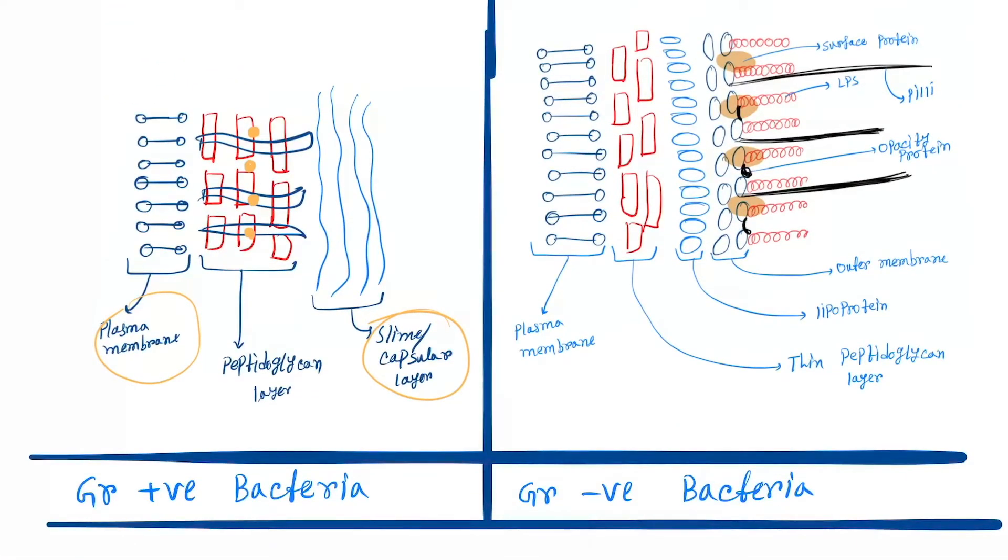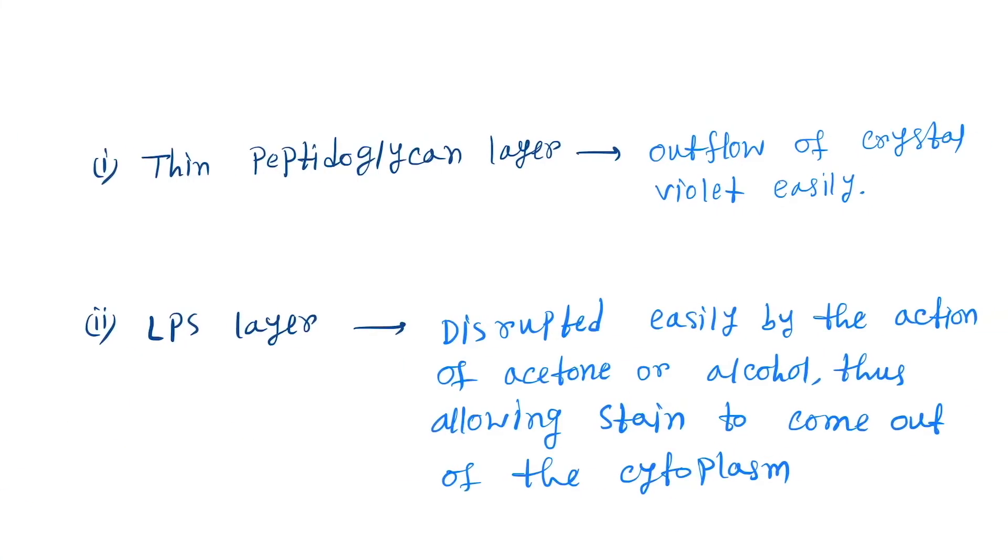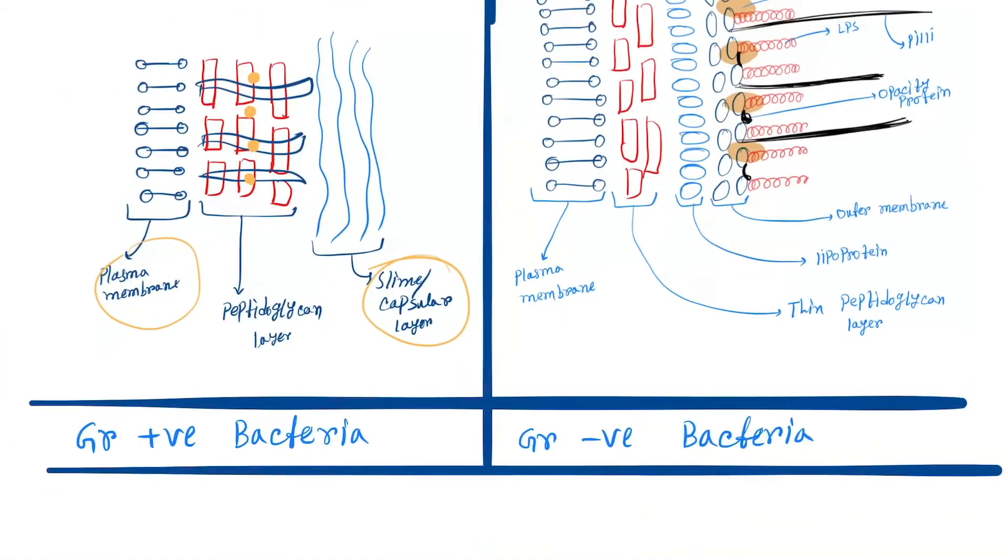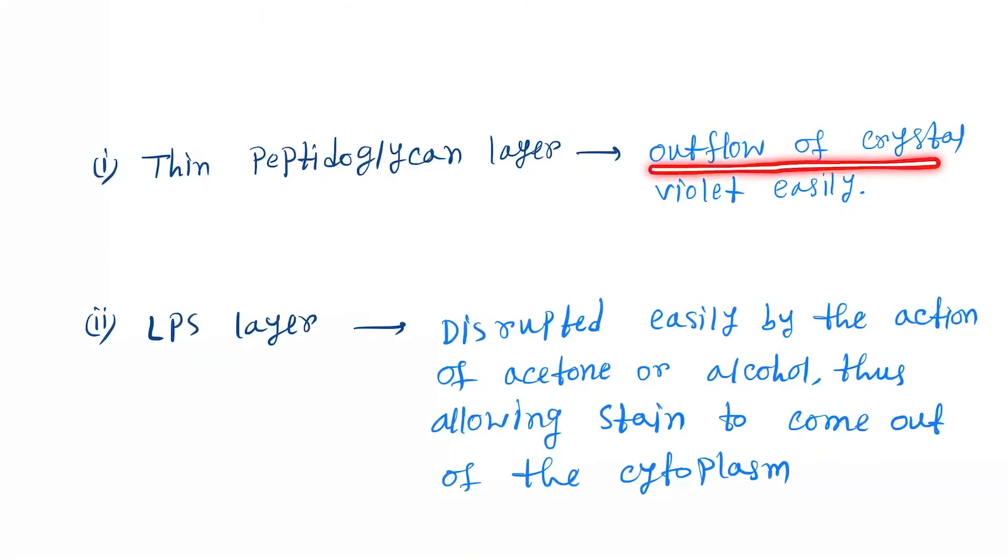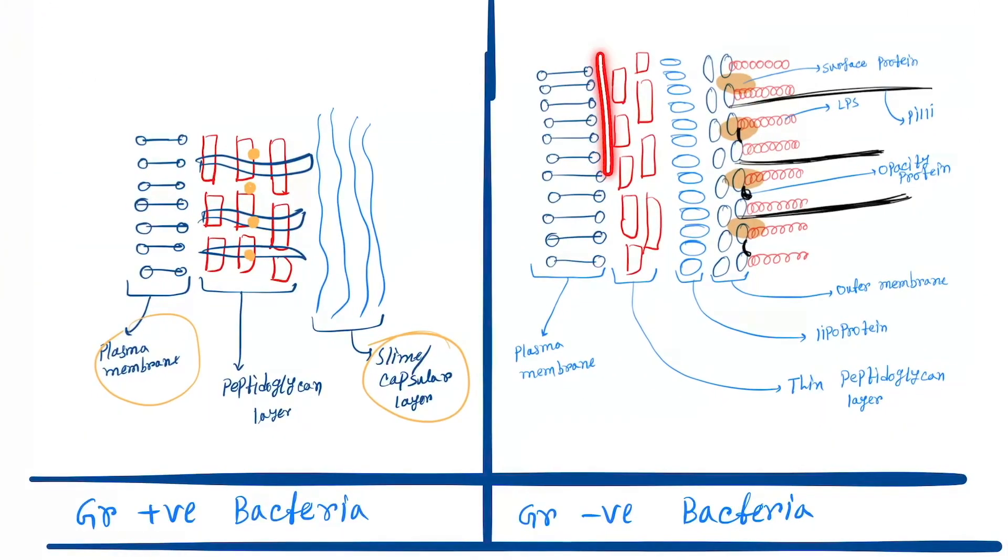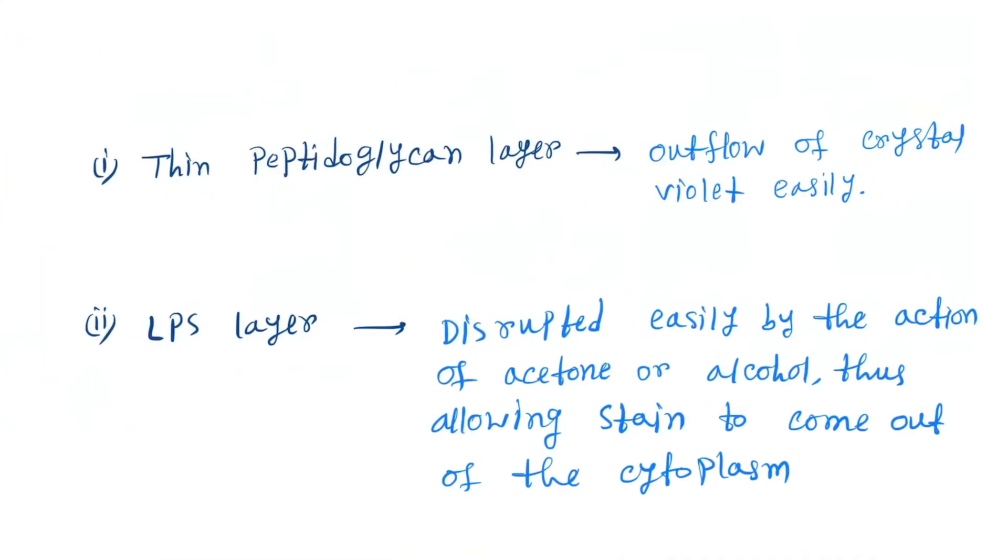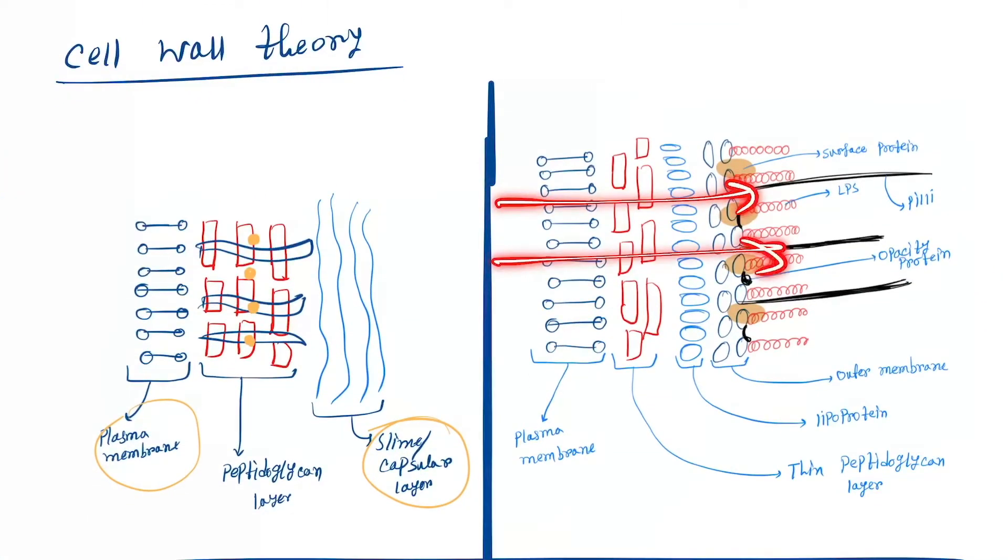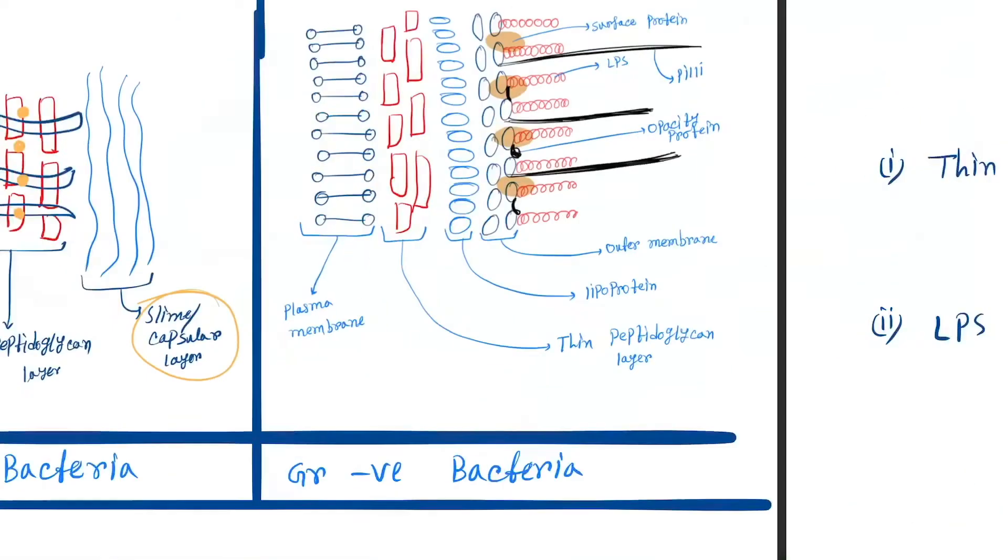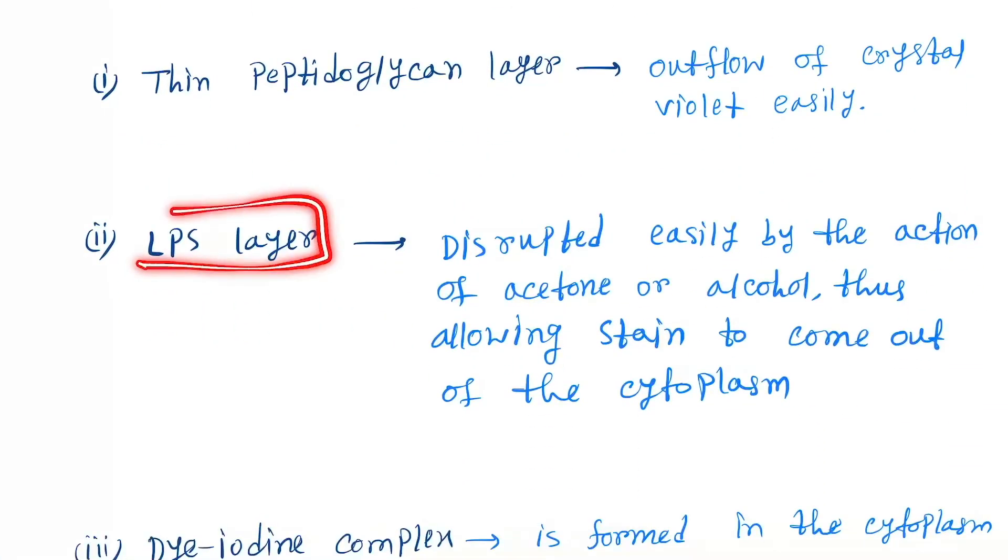In gram positive bacteria, the peptidoglycan layer is thick, and in gram negative the peptidoglycan layer is thin. Due to the thin peptidoglycan layer in gram negative bacteria, outflow occurs easily. But in gram positive, due to thick peptidoglycan layer, outflow is not easy.